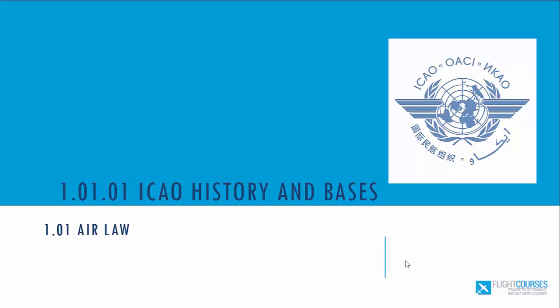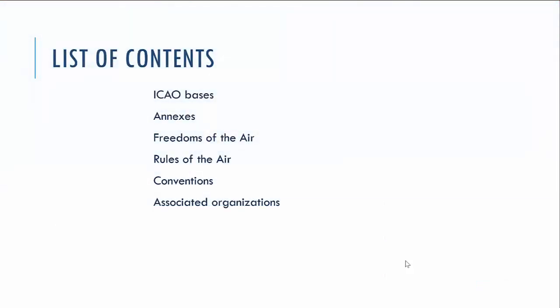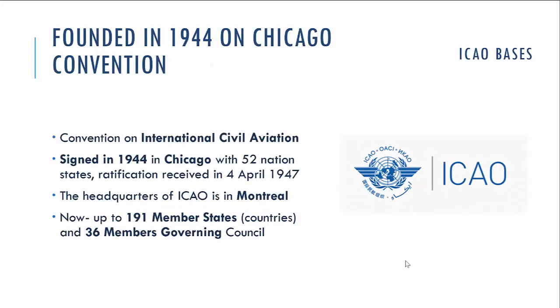We'll start by discussing the ICAO organization, as we will also have questions on this topic. We'll cover the foundation of ICAO, the annexes signed with the main contract, the freedoms of the air, the rules of the air defined in those contracts, and the conventions held during the life of ICAO, as well as organizations associated with ICAO.